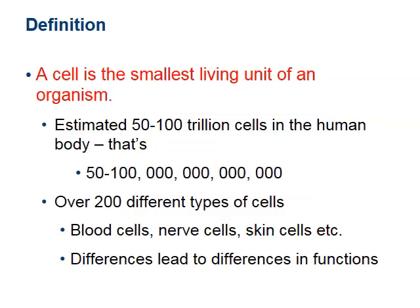A cell is the smallest living unit of an organism. Go back and relate this to Chapter 1 levels of complexity: atoms form molecules, molecules form organelles, organelles form cells, cells form tissue, tissue forms organs. The cell is the smallest thing considered living in an organism. The human body is made up of trillions of cells, and there are over 200 different types.